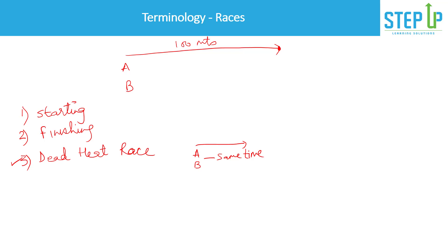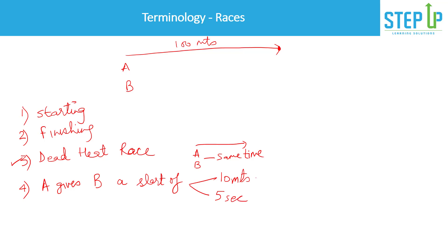Two important concepts: sometimes statements say 'A gives B a start.' They can express this in terms of distance — for example, 'A gives B a start of 10 meters.' This means B can start running from 10 meters ahead, so B only has to cover 90 meters while A has to cover the entire 100 meters from the starting point.